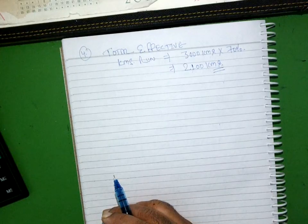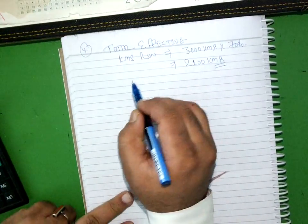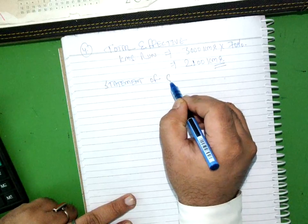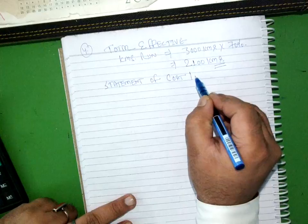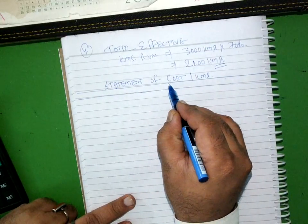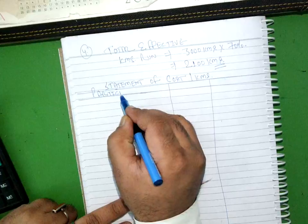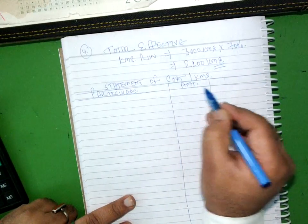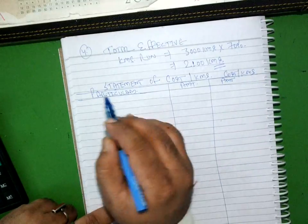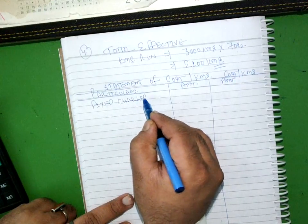And as I told you, all the fixed cost will be summarized together and then divided. So we will make a statement of cost per km. We will have the particulars and then amount, and this is cost per km.